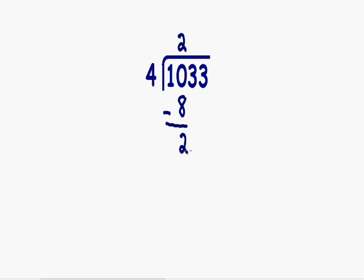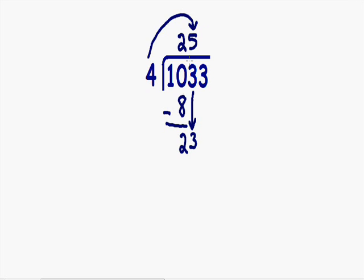The next thing we want to do is bring down our next number. So we're going to bring down this number 3. How many times does 4 go into 23? 4 goes into 23 five times. 4 multiplied by 5 gives us 20. If we subtract 23 minus 20, we get the number 3.